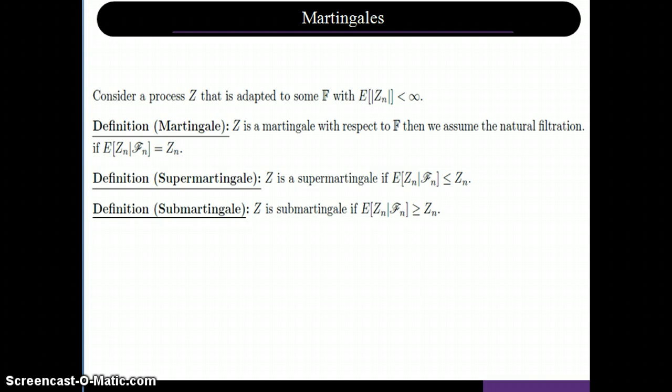Alright, now here's a formal definition of martingales. We also make the addition of super martingale and sub martingale. A super martingale is when the expected value of the process is less than the current value of the process. And a sub martingale is when the expected value of the process is greater than the current value of the process.